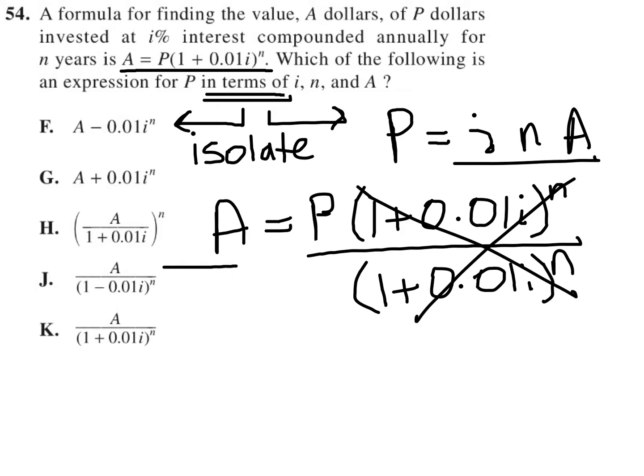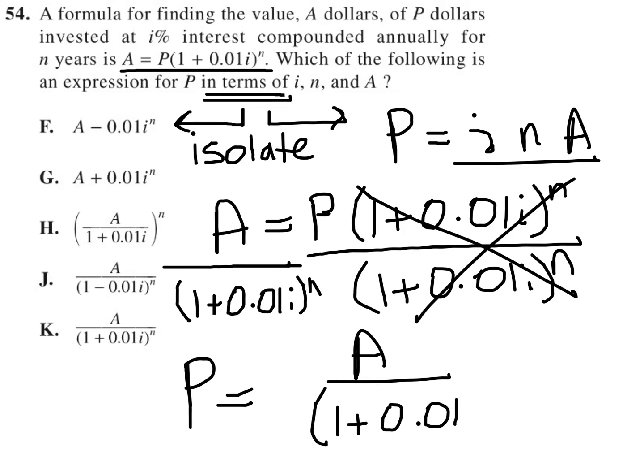Of course, whatever I divide one side by, I have to also divide the other side by. So I'm going to also divide by the 1 plus 0.01I to the N on the left-hand side. And practically what I'm left with is P alone equals A over (1 plus 0.01I) to the N power.